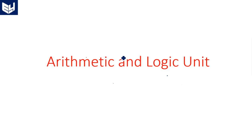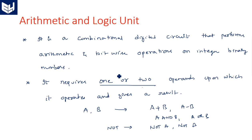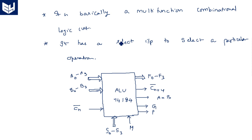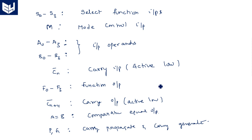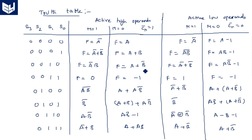Hi everyone. In this video I am going to tell you how to write a VHDL code for the Arithmetic Logic Unit. From the previous two videos we have explained what the ALU is — a combinational digital logic circuit that performs arithmetic and logic operations. It is basically a multi-function device which performs several operations depending upon the type of input called select lines. It needs one or two operands. Along with the two inputs and one output, we also have carry generate, carry propagate, comparative output, and carry output.